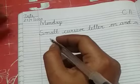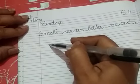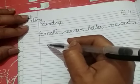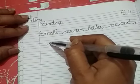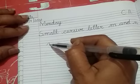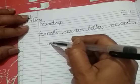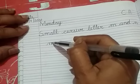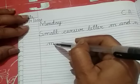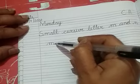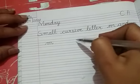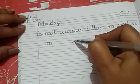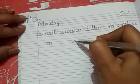Okay, let's start now. How to write M? Start from the third line, go up, then down, then go up, then down. Like this. One more time. Start from the third line like this.